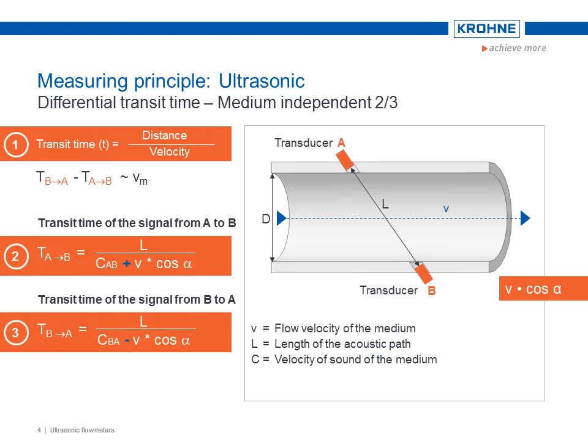The transit time of the signal is measured and then used with other variables to calculate the flow. Although the signal travels in a straight line, it is traveling at an angle, alpha, to the pipe axis.